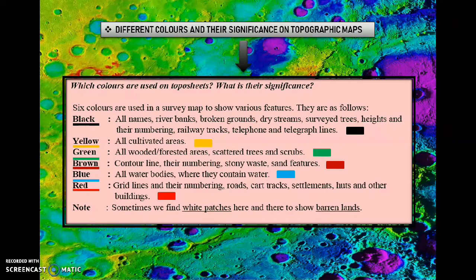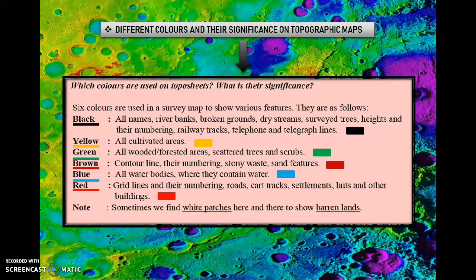I will show you how these conventional signs look in the next video. The next color is yellow. Yellow color on the map signifies cultivated areas — these are agricultural lands. The next color is green. Green color on your map represents wooded or forested areas. All scattered trees and scrubs are marked in green color on the map.